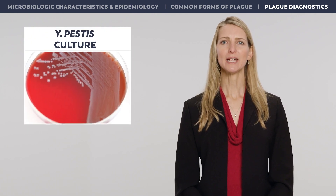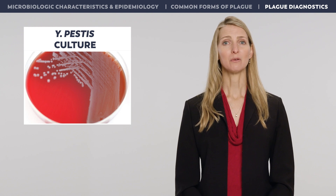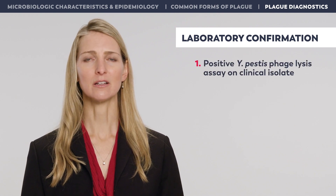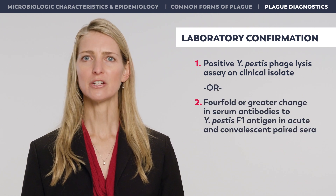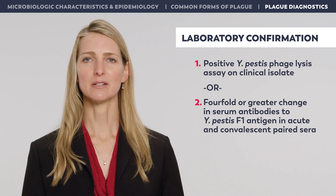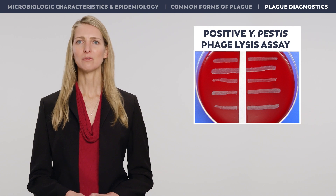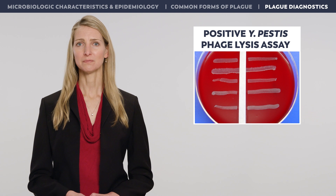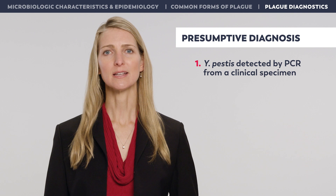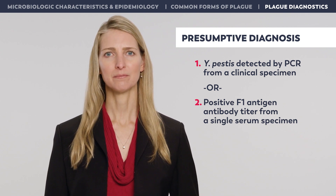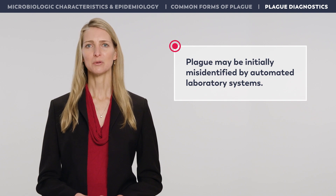In culture, Y. pestis grows at 28 to 35 degrees Celsius. The organism can be grown on a variety of media including blood agar, with small colonies developing after 48 hours. Laboratory confirmation of plague is based on either a positive Y. pestis phage lysis assay on a clinical isolate, or a four-fold or greater change in serum antibodies to Y. pestis F1 antigen in acute and convalescent paired sera. A presumptive laboratory diagnosis can be made when Y. pestis is detected by PCR from a clinical specimen, or if there is a positive F1 antigen antibody titer from a single serum specimen. Note that plague may be initially misidentified by automated laboratory systems, particularly MALDI-TOF, resulting in a delay in accurate diagnosis and appropriate treatment.